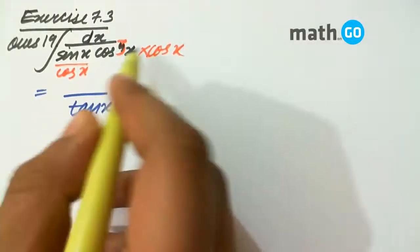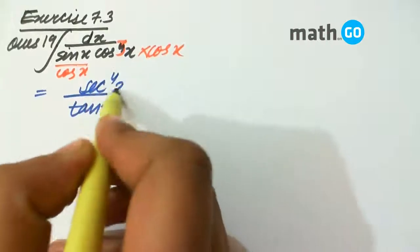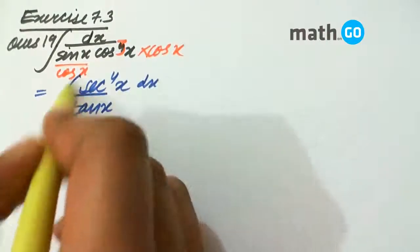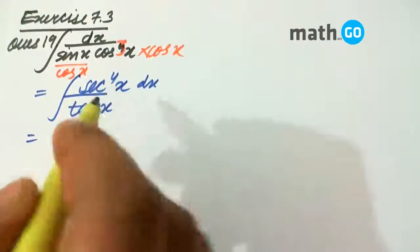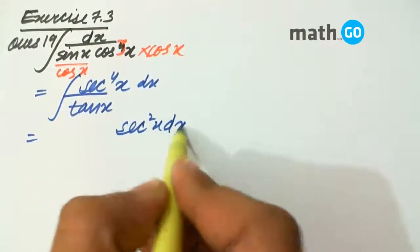Tan x in the denominator and sec to the fourth x. This can be written as this.